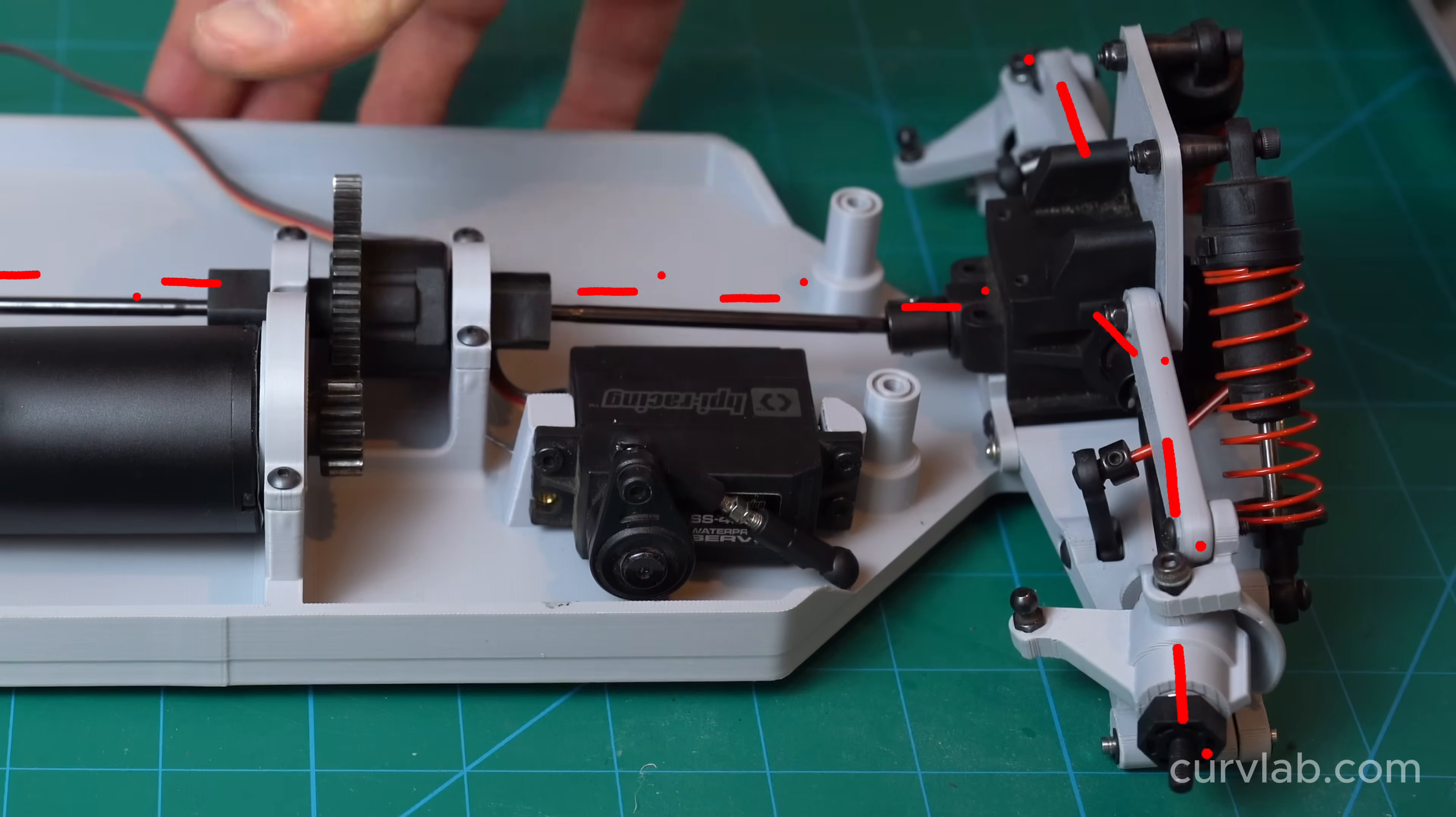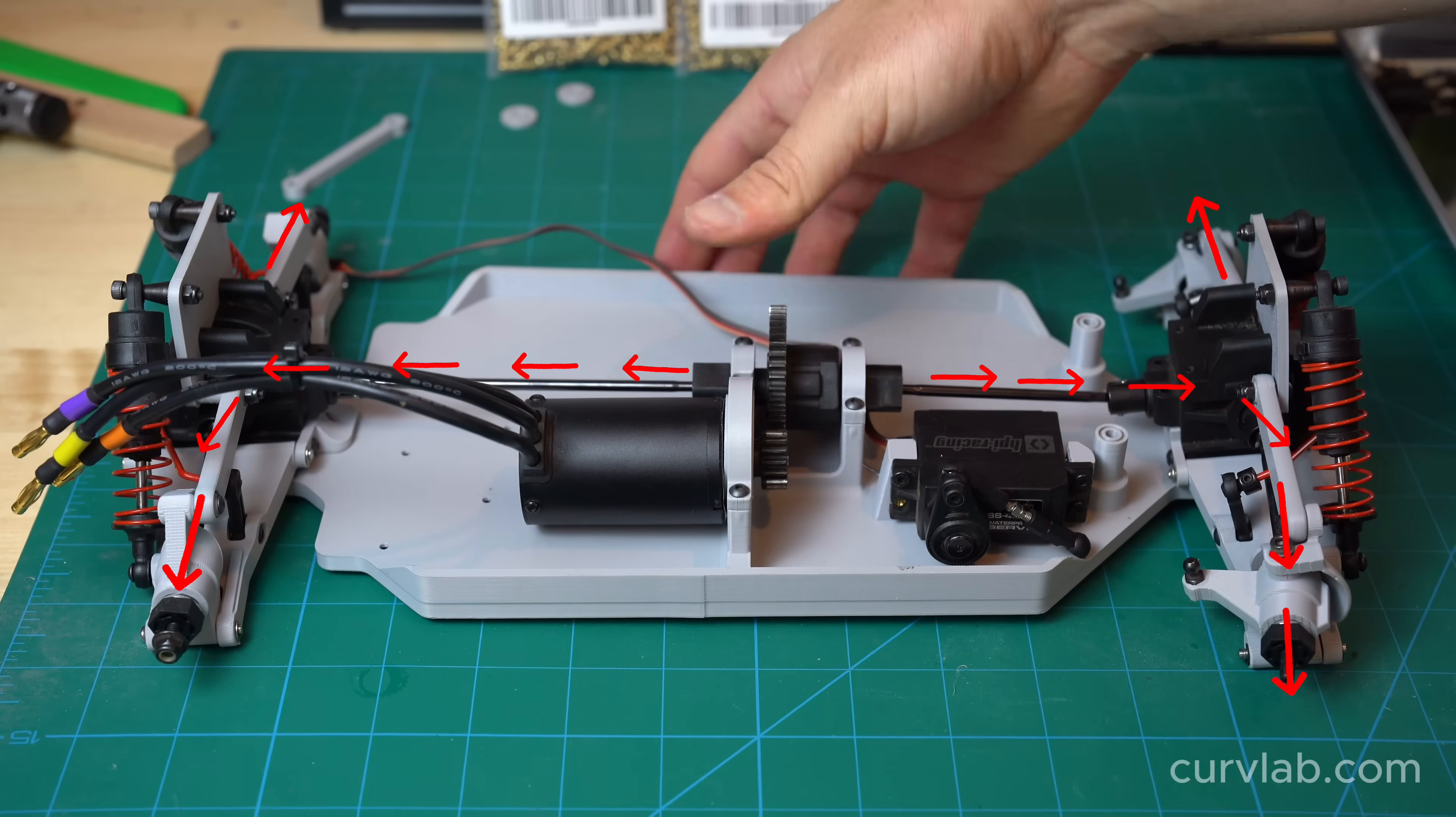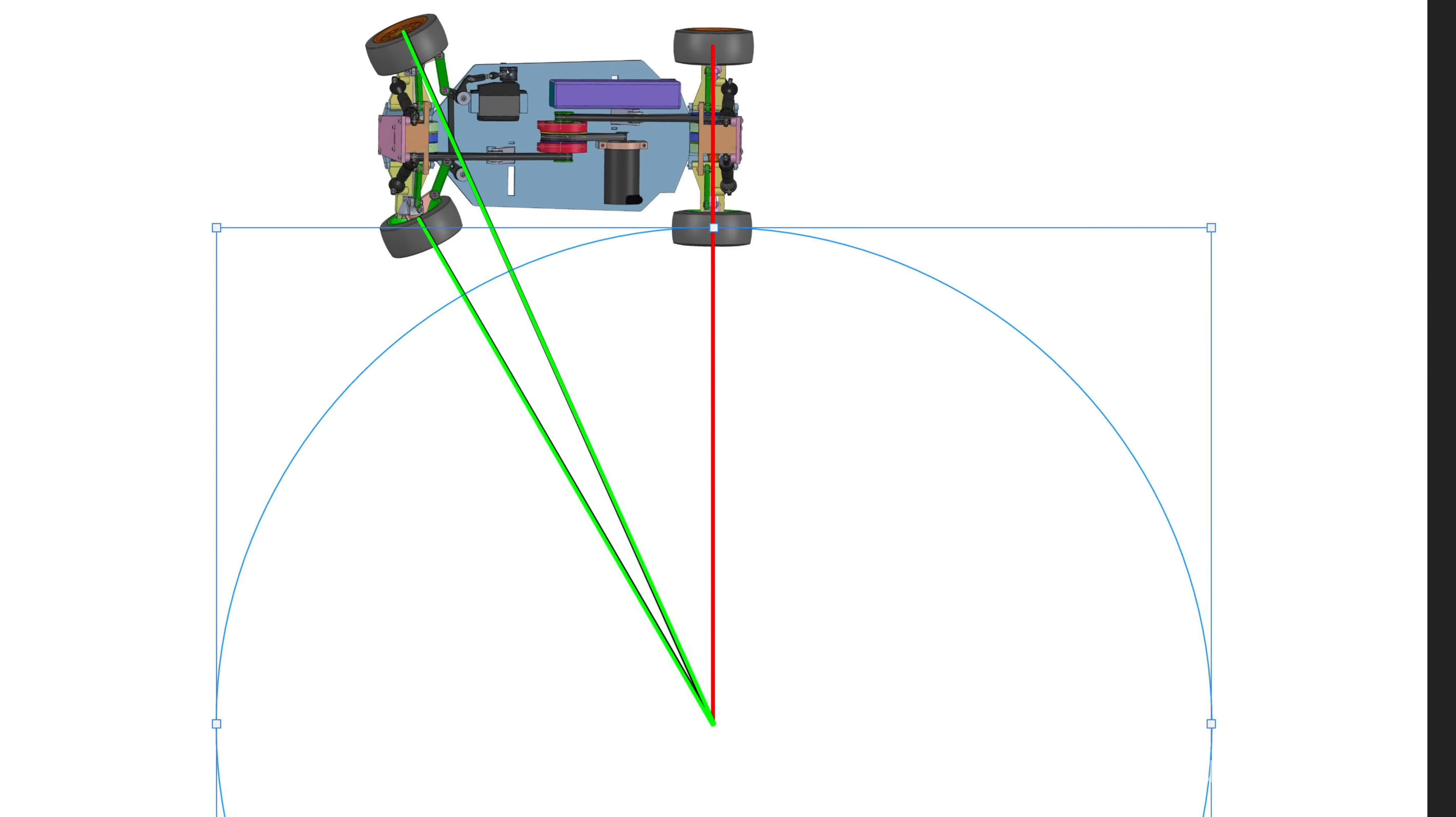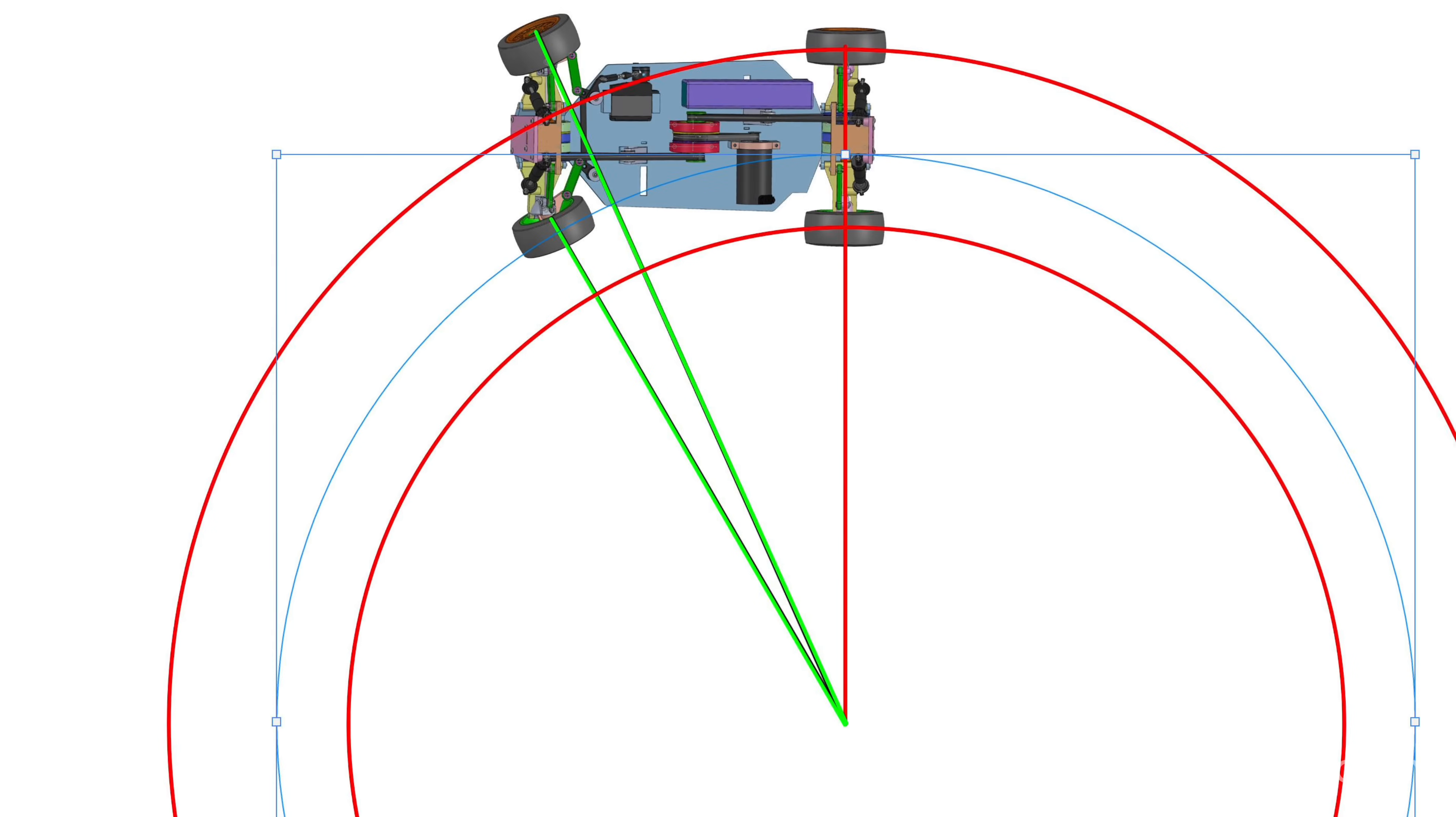Not only does turning cause the left and right wheel to spin at different speeds, but it causes front and rear wheels to spin at different speeds. Let's look at the diameter of the circle that the rear axles trace in red versus the front axles in green.